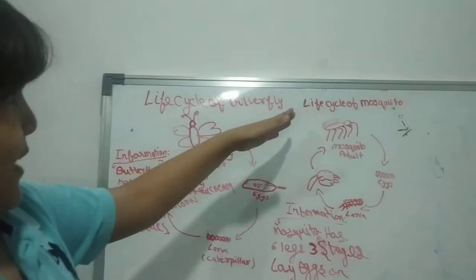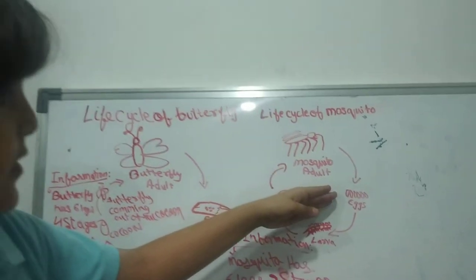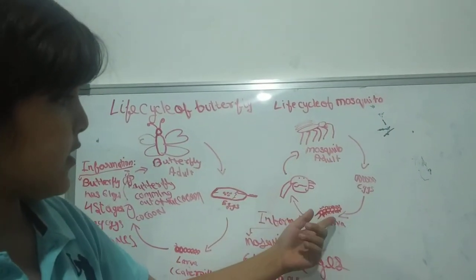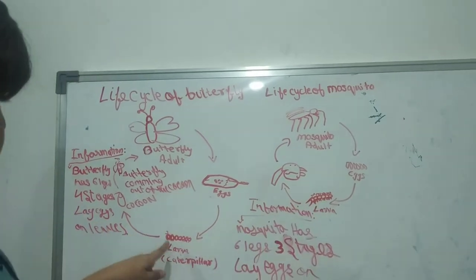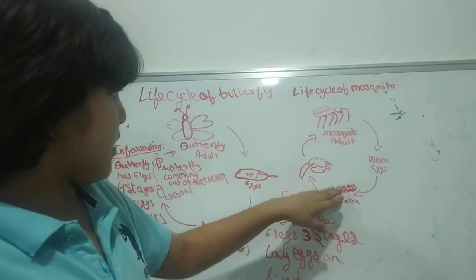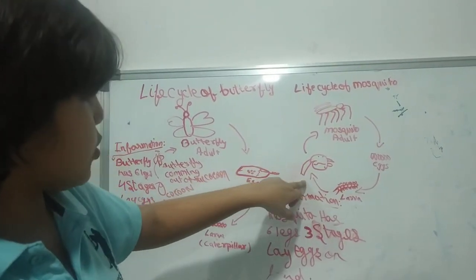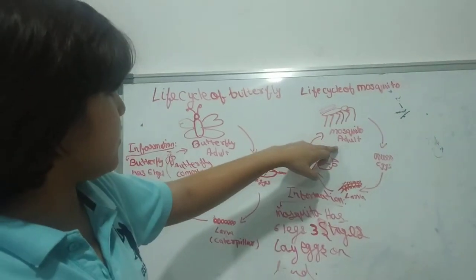So the life cycle of mosquito is mosquito, and then the eggs, and then the larva. They look like that, they look like that, not this, but the same but they have so many legs, and this is a cocoon of that, and then this.